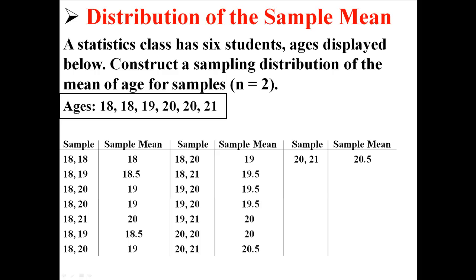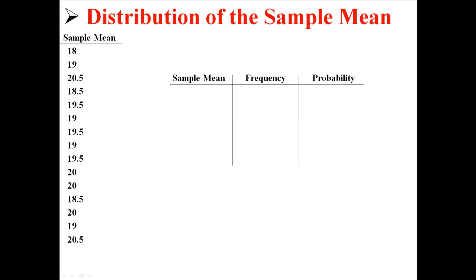What I have here is all of the possible pairs — all of the possible combinations. If you're curious how I got this, you can go back to my lecture on combinations. It's all the different ways the numbers can be combined, all the ways we can take samples of size 2. Next to that I've calculated the mean for each of those combinations. I'm going to list all the means and create a probability distribution, taking all the means, counting how many we have, and then calculating the probabilities associated with each mean.